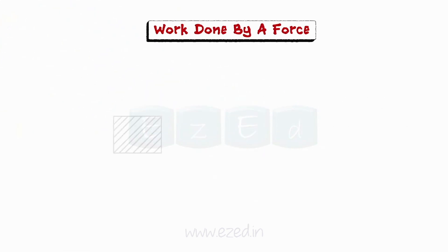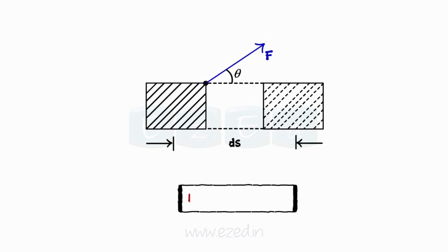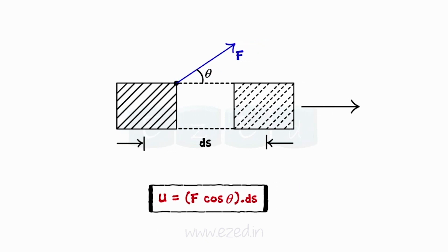Let us now learn about work done by a force. If a rigid body is subjected to a force F which causes an infinitesimal displacement ds, then the work done U by force F during the displacement ds can be given by U equals F cos theta into ds, where theta is the angle between the direction of force and the direction of displacement.